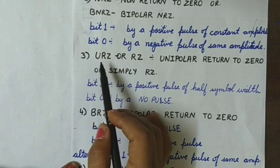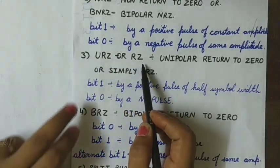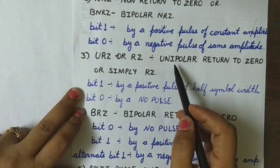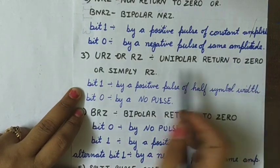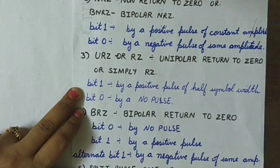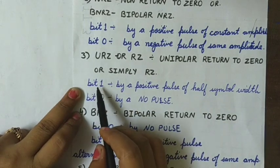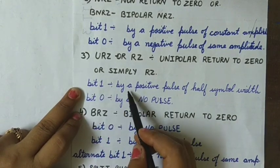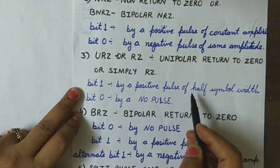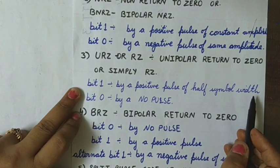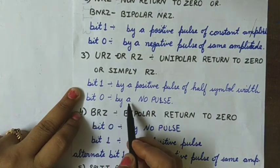The third one is the URZ or RZ. Its full form is unipolar return to zero or simply return to zero. In this scheme the symbol one is transmitted by a positive pulse of half symbol width and symbol zero by no pulse.